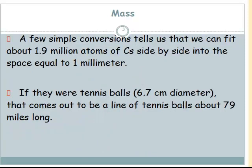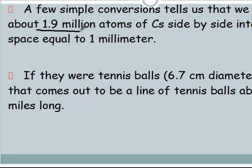I did a little dimensional analysis calculation: I converted one millimeter to atoms of cesium — from millimeters to meters, then meters to picometers, then used the radius of cesium converted to diameter. I figured out that you could fit about 1.9 million cesium atoms side by side in that tiny millimeter we've been measuring in lab. That's crazy small again.